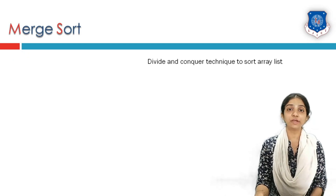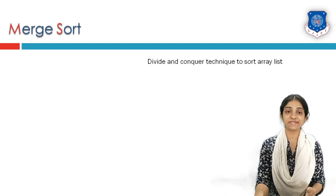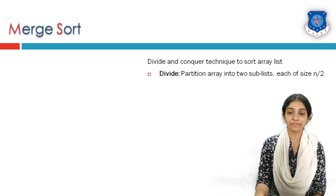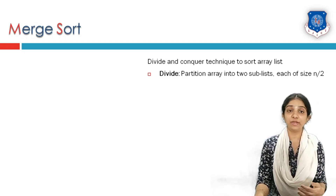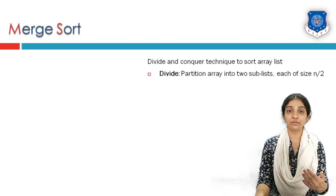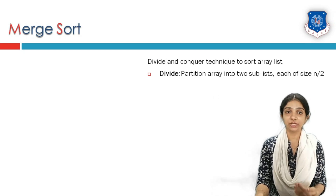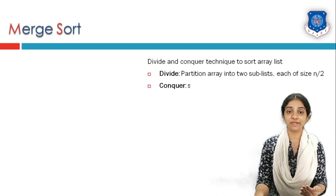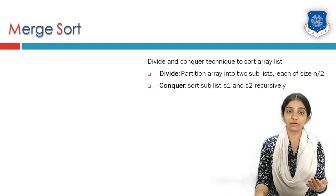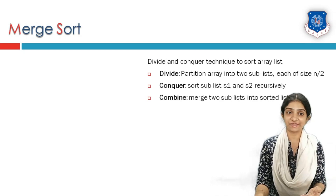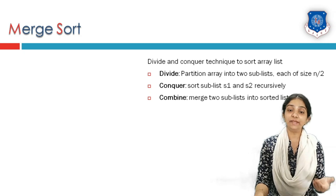Merge sort is basically a divide and conquer technique to sort list elements. As we know, divide and conquer works in three stages: divide stage, conquer stage, and combine stage.